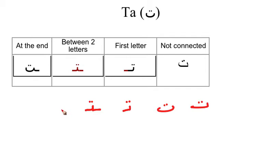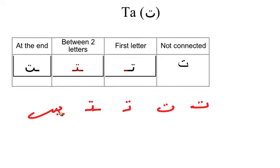Remember in the previous video we wrote the word BAIT. BAIT has the letter TA at the end. This is the letter BA, the dot for it, then the two dots for the letter YA, and then two dots for the letter TA. BAIT, which means home or house.